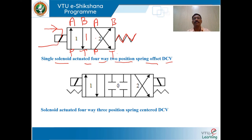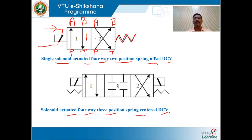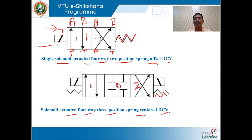We shall draw a symbol for a solenoid actuated four-way three-position spring-centered directional control valve. Three squares are shown — positions zero, one, two. Spring-centered with solenoids on either side to actuate the spool.